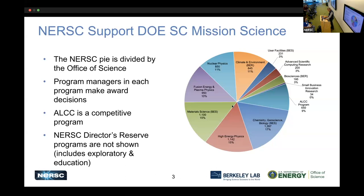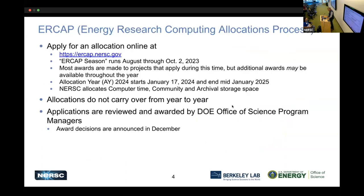The total time at NERSC is divided up among the different programs — we call them offices. Here's the NERSC pie and how it's divided up. Some programs like BES internally divide themselves into sub-areas: geosciences; biology and chemistry; materials science; and user facilities. These slices represent the pools of allocation each program manager has to give out. ALCC is also included here — it's a separate competitive program with its own website. The director also holds about 10% of total NERSC time as a reserve.